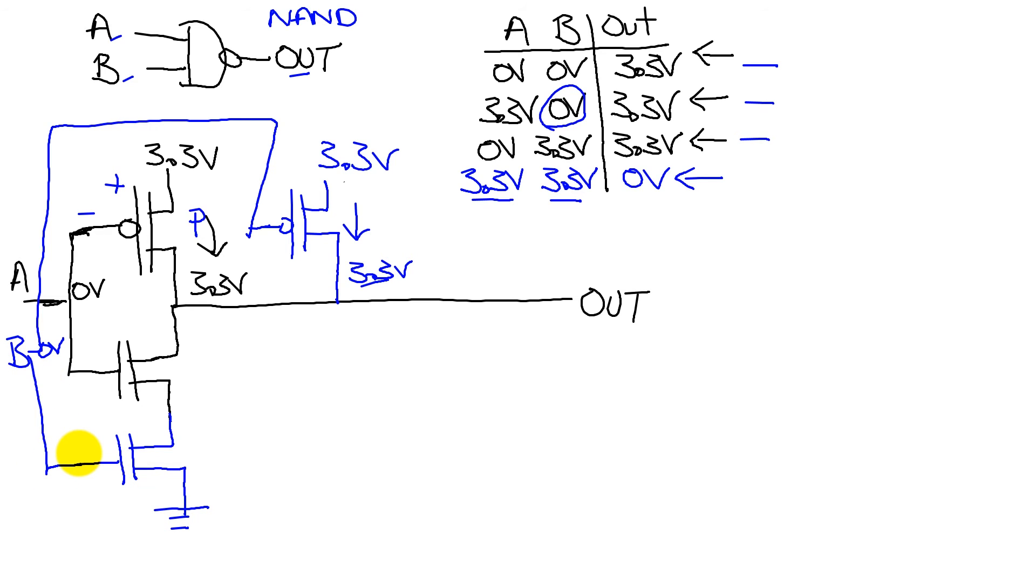And now let's look at the other case here. If A is high and B is high, we see that if A is high, this is 3.3 volts, and this one is off. If B is high, this is 3.3 volts, and that one's off.